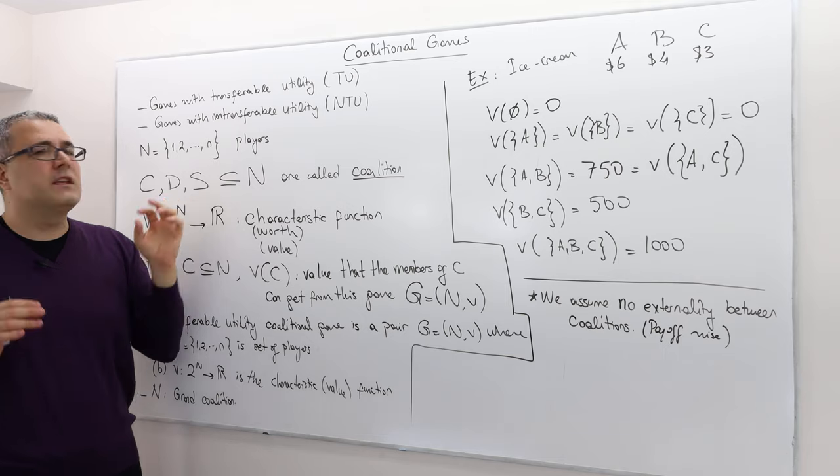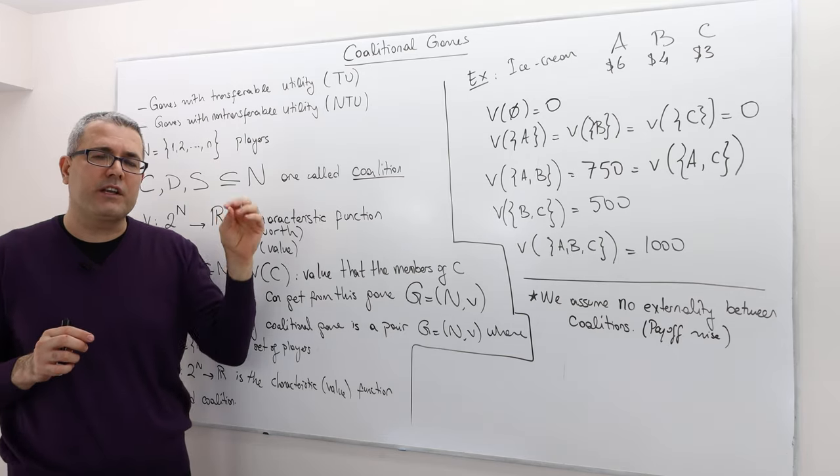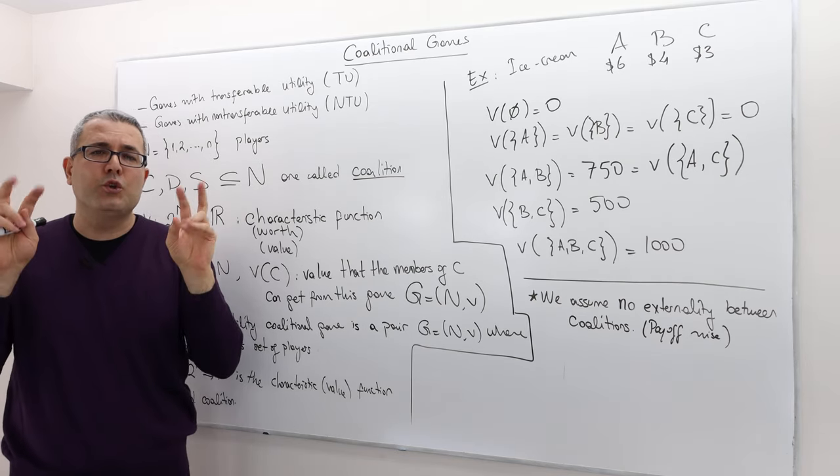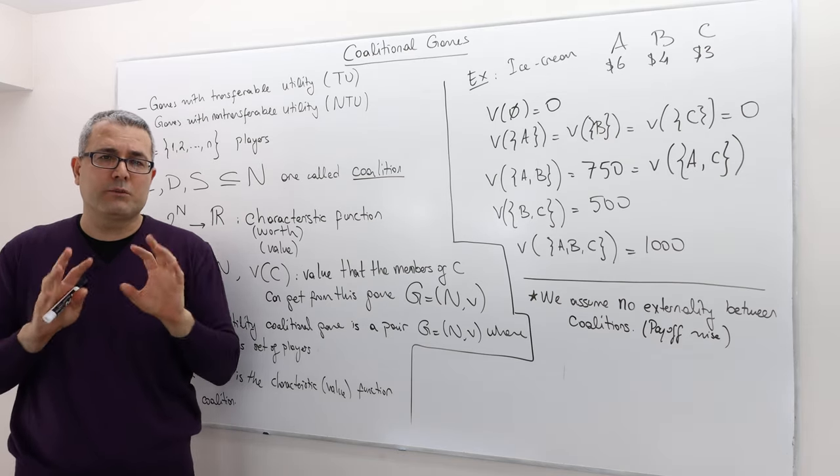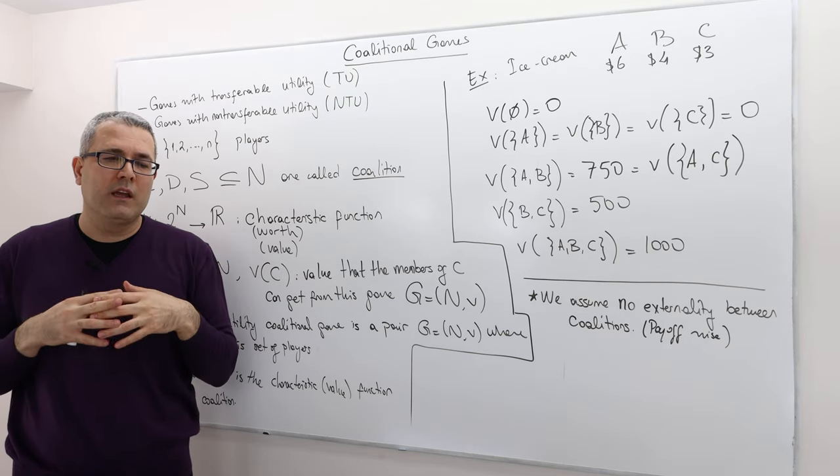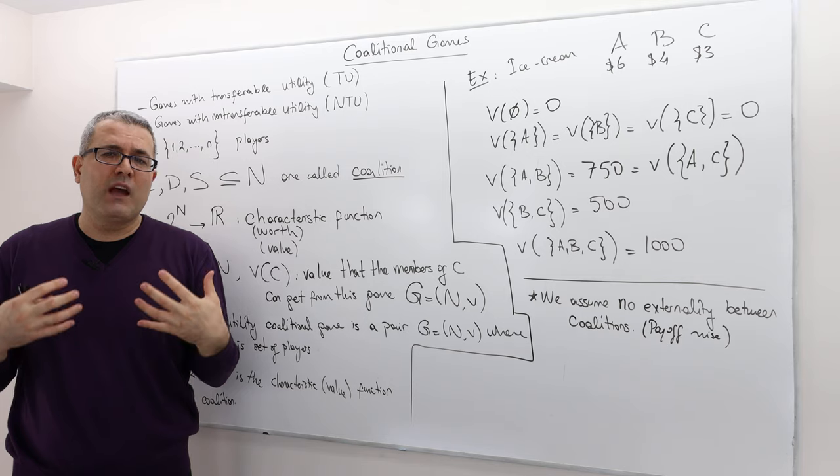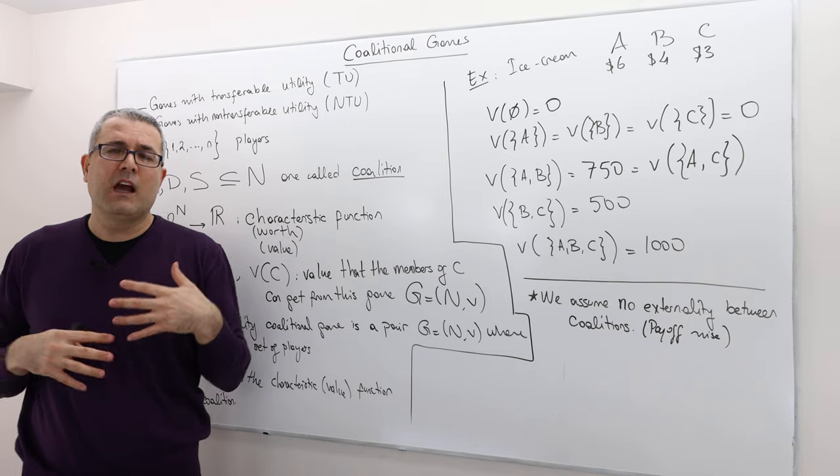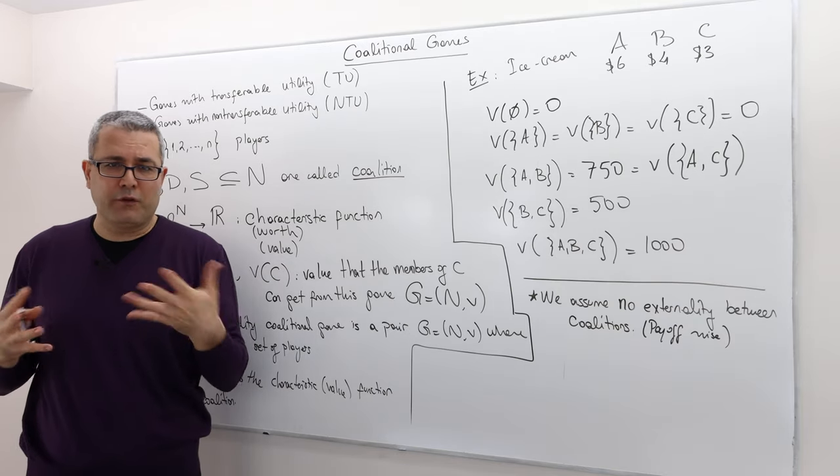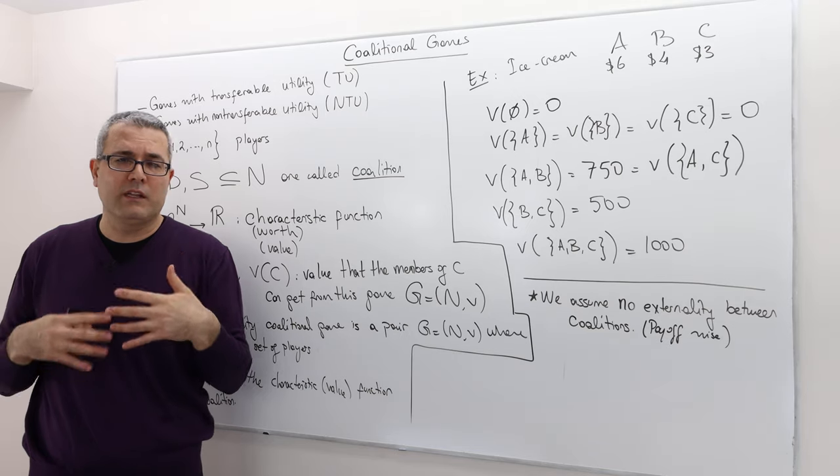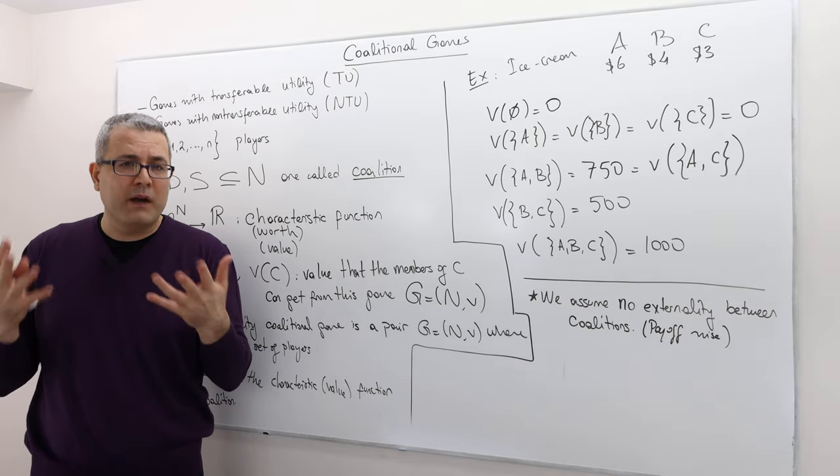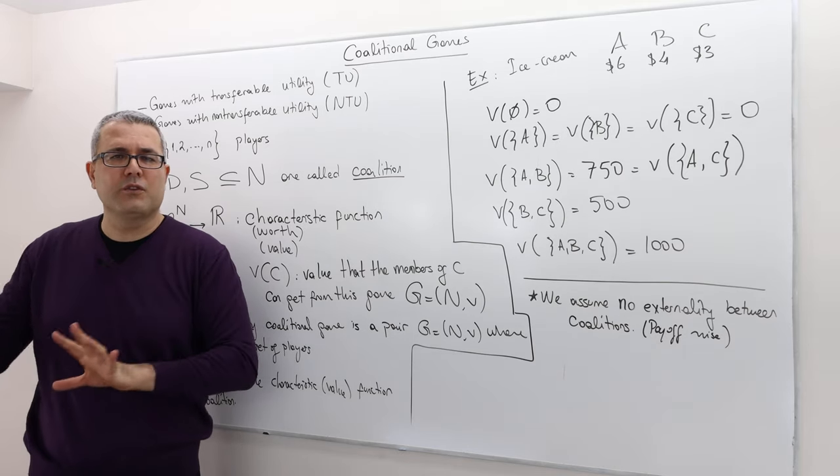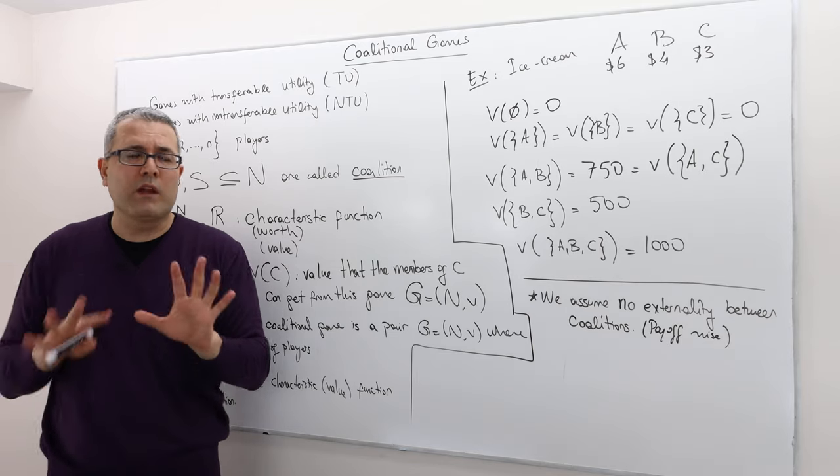Well what is the difference? The key difference is the following. The transferable utility games are those games where players can transfer utility among themselves perfectly, or put it this way: they are getting some benefit as a group and they can distribute this benefit among themselves perfectly. How is this possible? Well it could be a commodity that is perfectly divisible, or maybe there's some other commodity like money, so they can transfer money among themselves and transfer utility among one another.